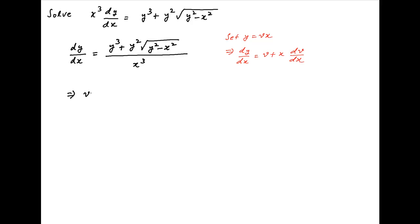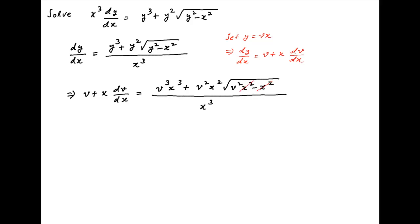Using this substitution, the differential equation becomes v plus x times dv/dx is equal to v cubed x cubed plus v squared x squared times the square root of v squared x squared minus x squared, divided by x cubed. After cancellation, the right-hand side simplifies to v cubed plus v squared times the square root of v squared minus 1.